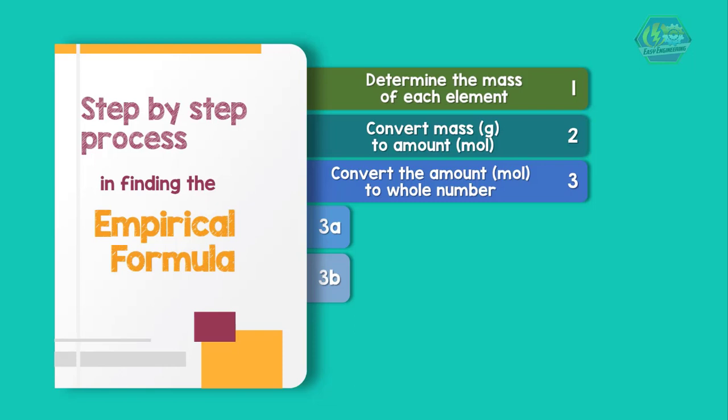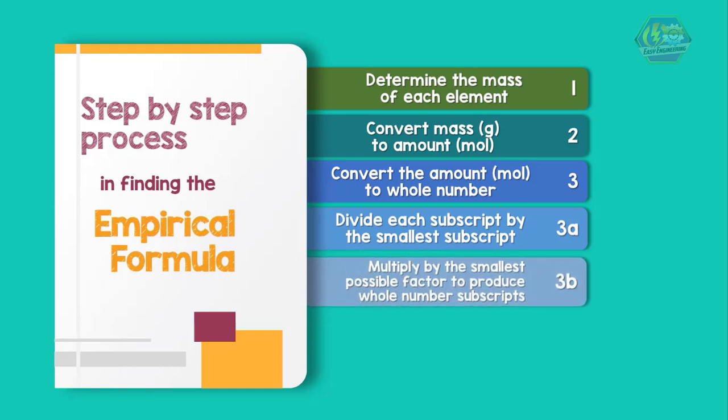To accomplish this math conversion, you need to divide each subscript by the smallest subscript, and if necessary, multiply through by the smallest integer that turns all subscripts into integers. Now let us try an example.